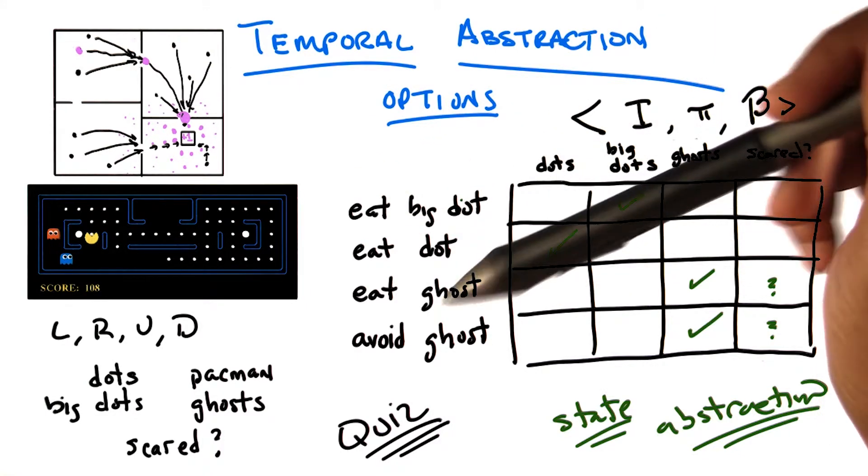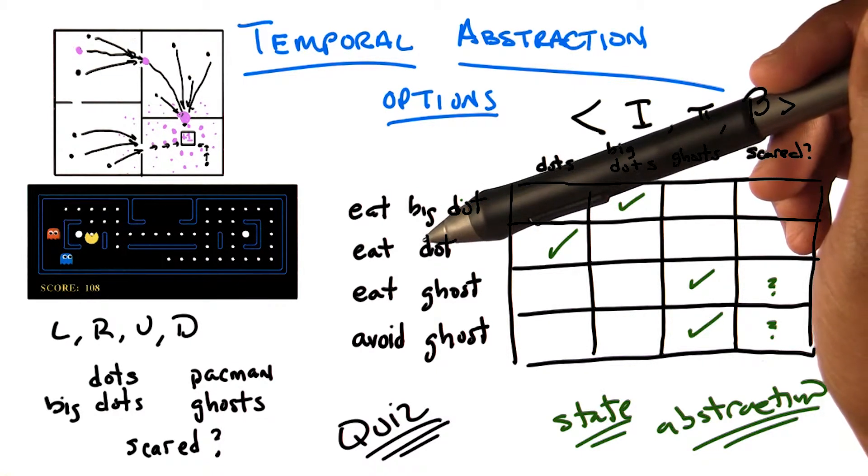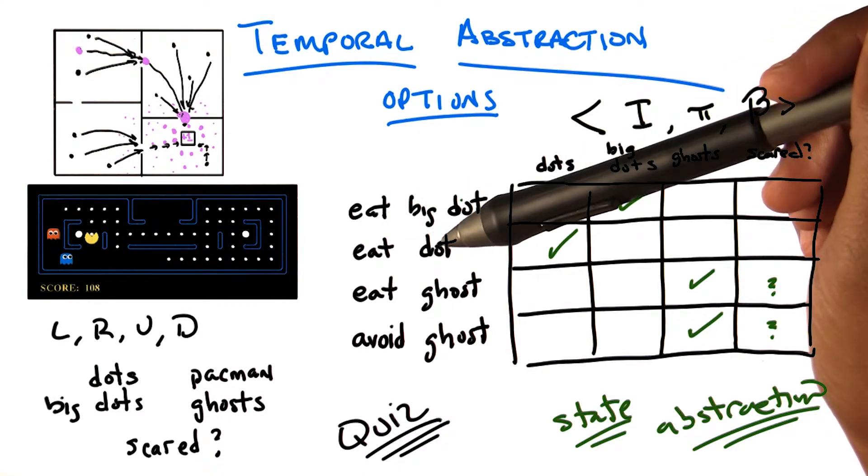And we just have to hope in the real world that the parts of the state space that might matter, such as, I don't know, a polar bear, the location of the closest polar bear, it will be announced to me when that becomes relevant. And I can start paying attention to it.